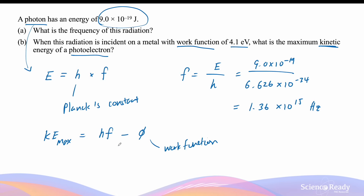This equation demonstrates that the photon's energy is first used to overcome the work function of the metal to remove the electron, and whatever energy remains is transformed into the kinetic energy of the photoelectrons. The kinetic energy of the photoelectron depends on the frequency or energy of the photon and the work function of the metal. If the work function is higher, more energy is needed to remove the electron, so less energy remains to become kinetic energy.